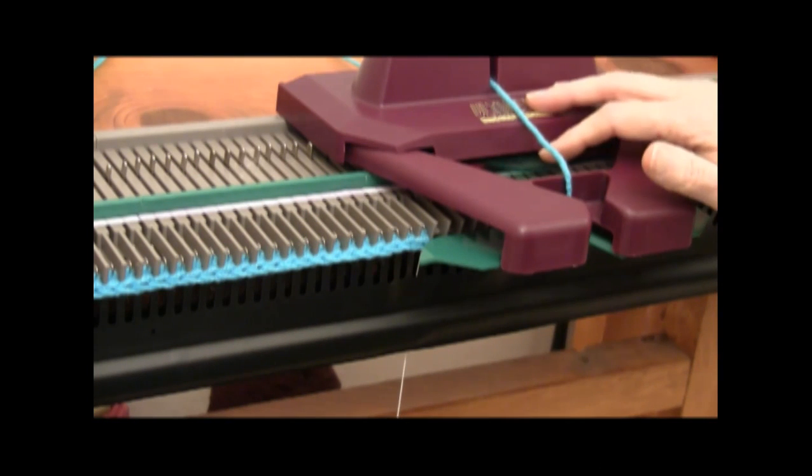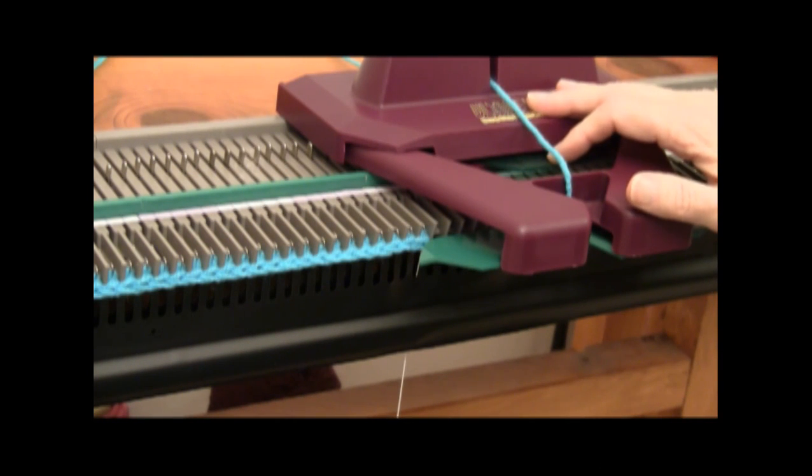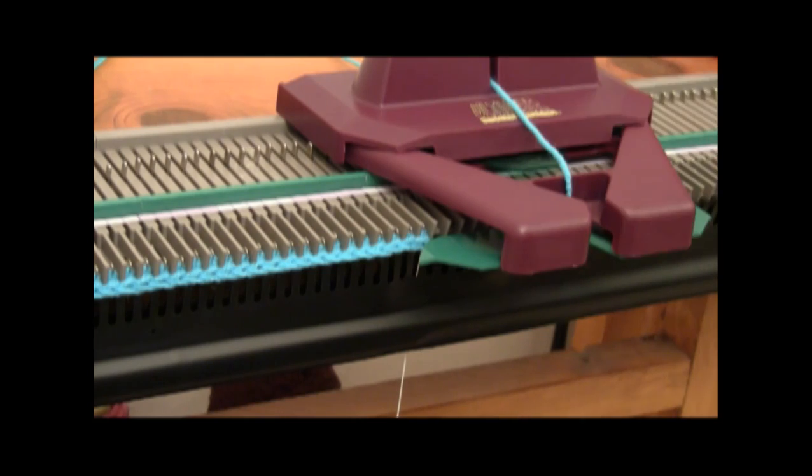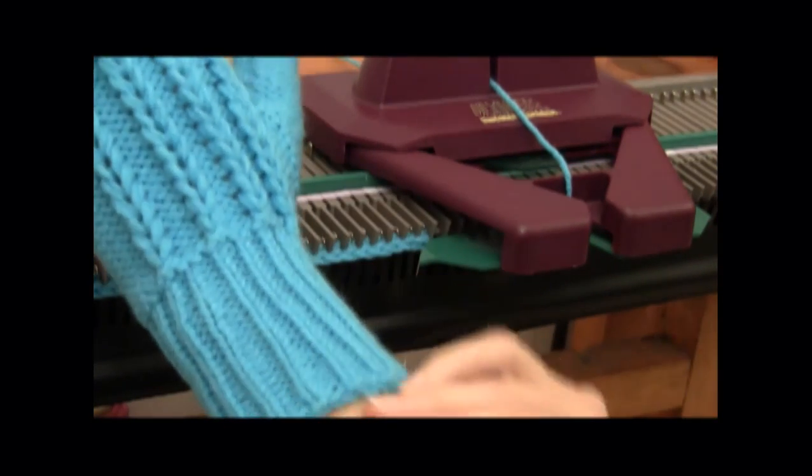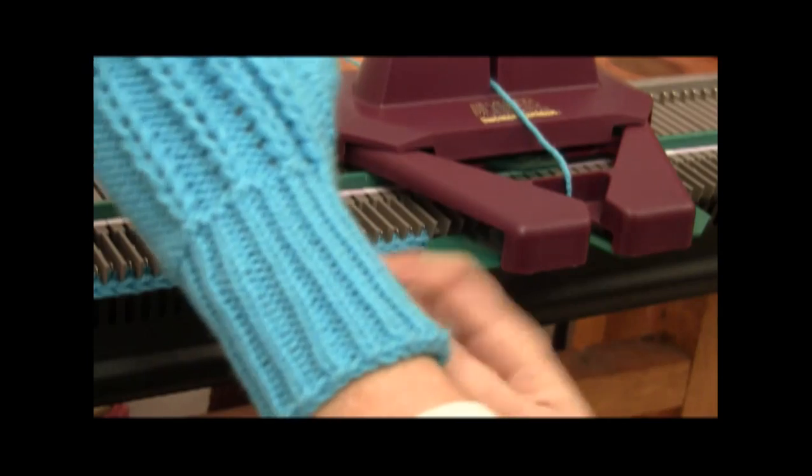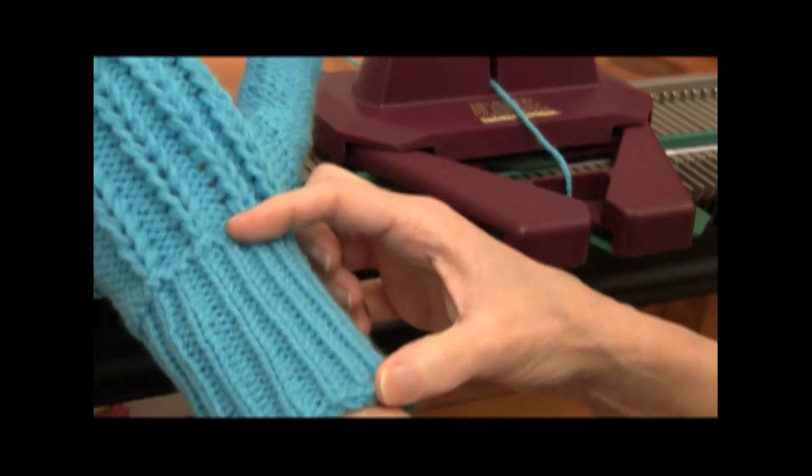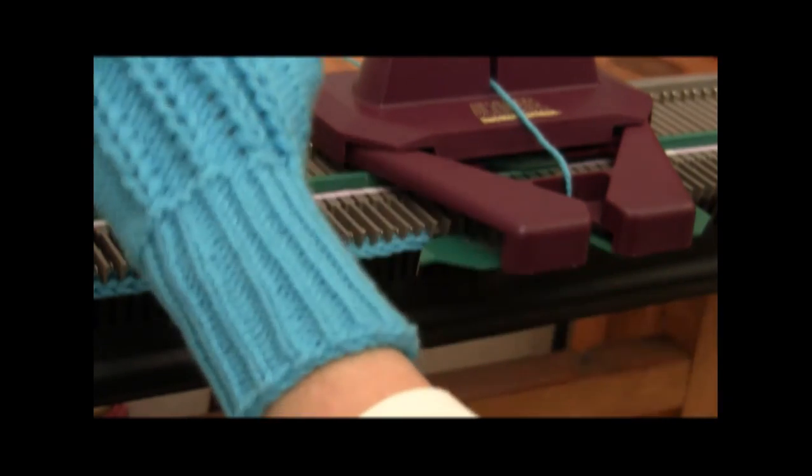I'm using Key Plate 1. I'm going to knit 22 rows to make a long cuff. I wanted the cuff to be long and warm. It's 3½ inches from the beginning to the end of the ribbing.